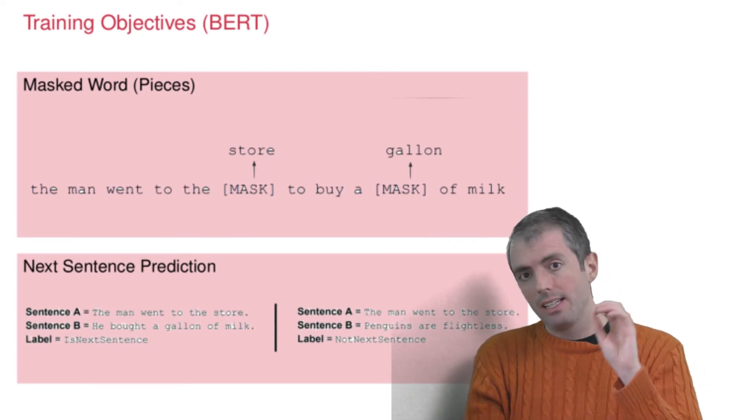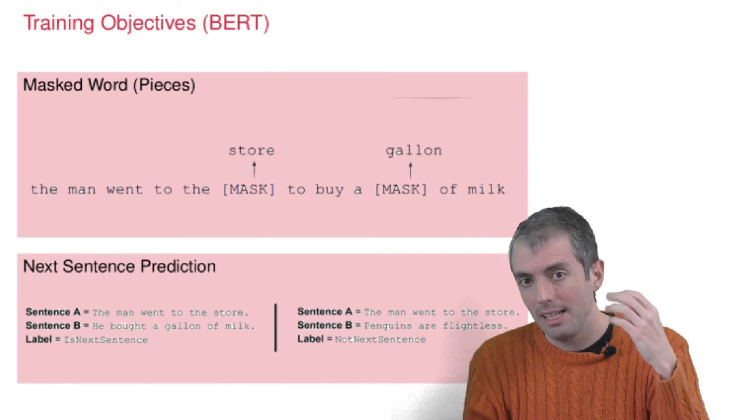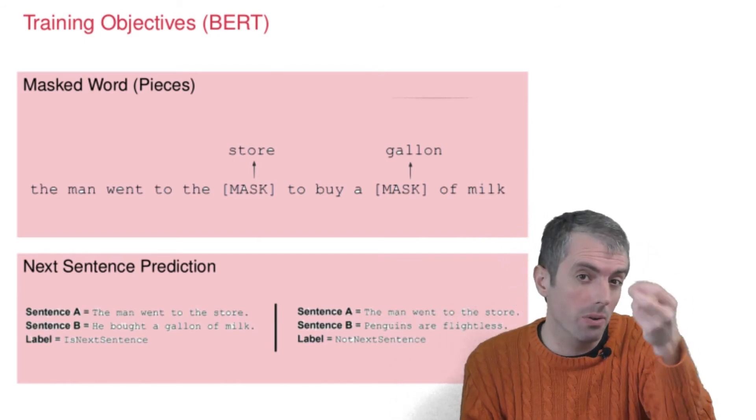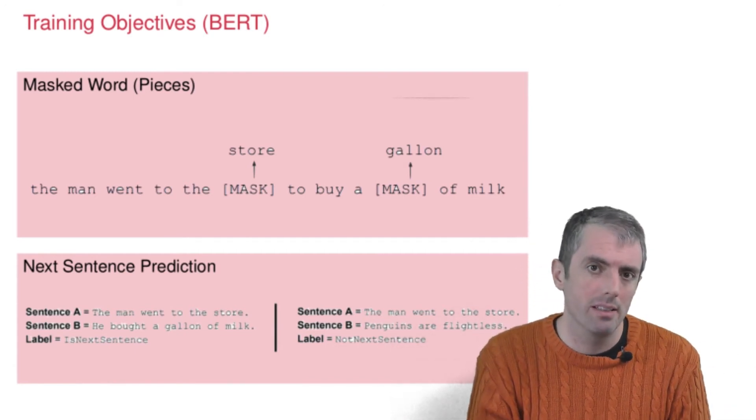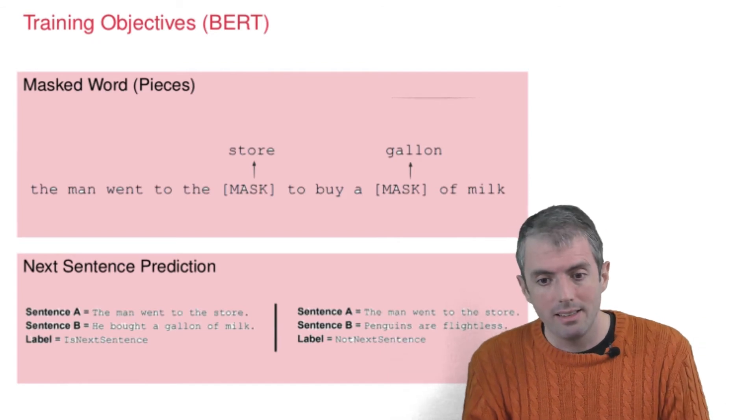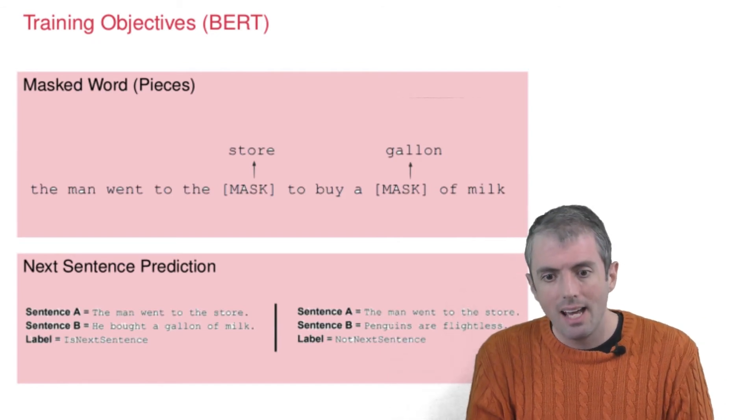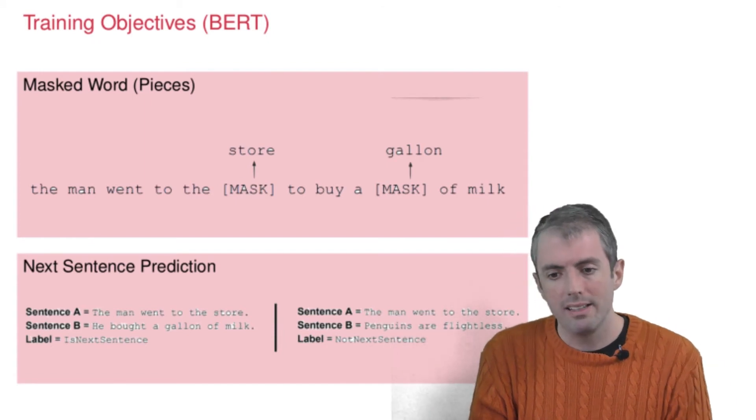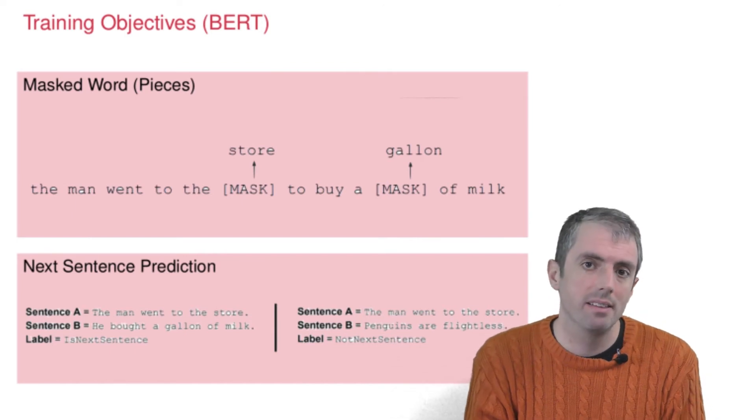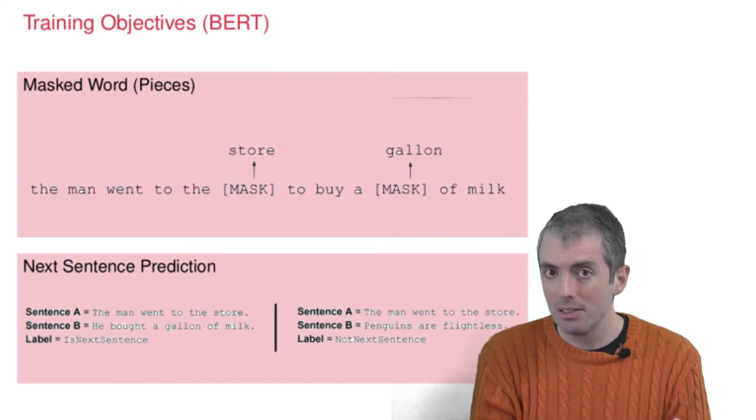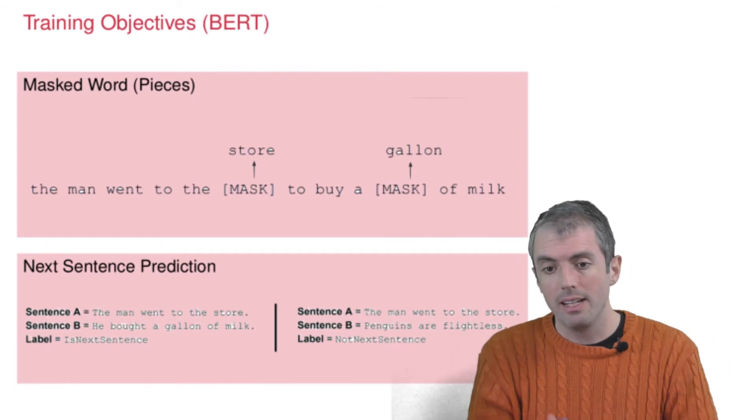Another innovation in how these models were trained was next sentence prediction. So in addition to trying to predict local things within a sentence, you also want to try to capture how the sentence might fit into a larger document. So given the sentence, 'the man went to the store,' is the next sentence, 'he bought a gallon of milk,' or is it 'penguins are flightless'? So if the model can reliably predict what sentence is next, it's doing a better job of capturing this mid-level coherence from one sentence to the next.